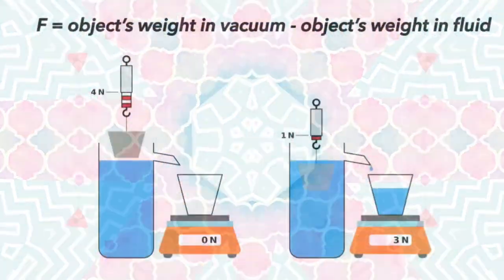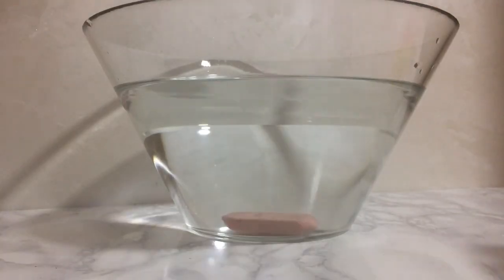There is another way to determine the buoyant force: F equals the object's weight in vacuum minus the object's weight in fluid. That's why we feel that we weigh lighter underwater.